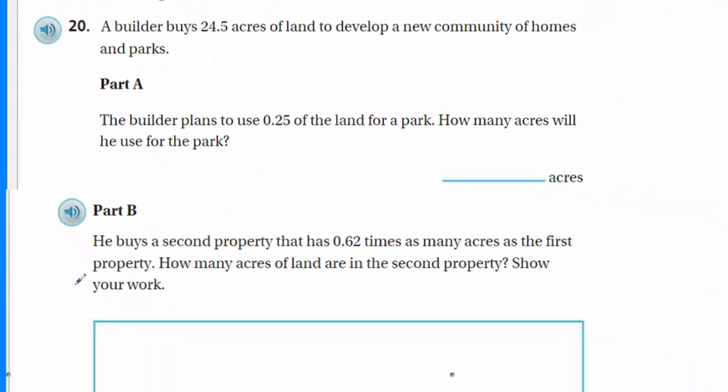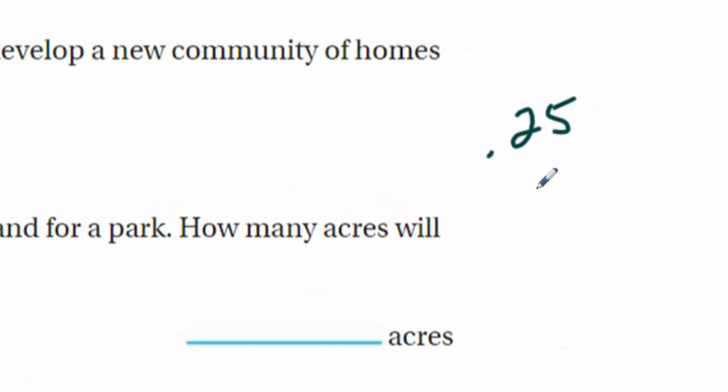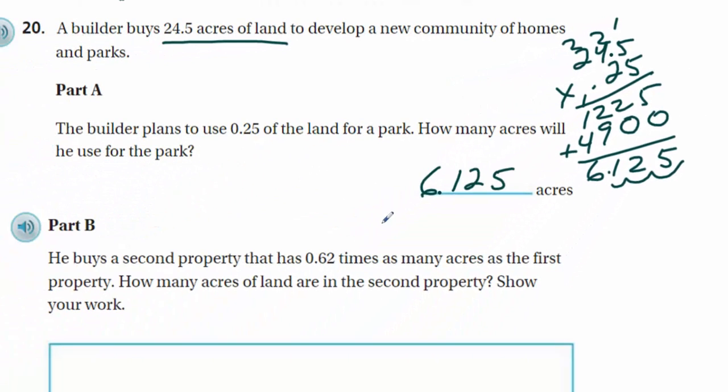A builder buys 24.5 acres of land to develop a new community of homes and parks. Now the builder plans to use 25 hundredths of the land for a park. How many acres will he use for the park? We're asked to find 25 hundredths of the land for the park. So we're going to take 25 hundredths and multiply it with 24.5. So I'm seeing 6.125 for part B.